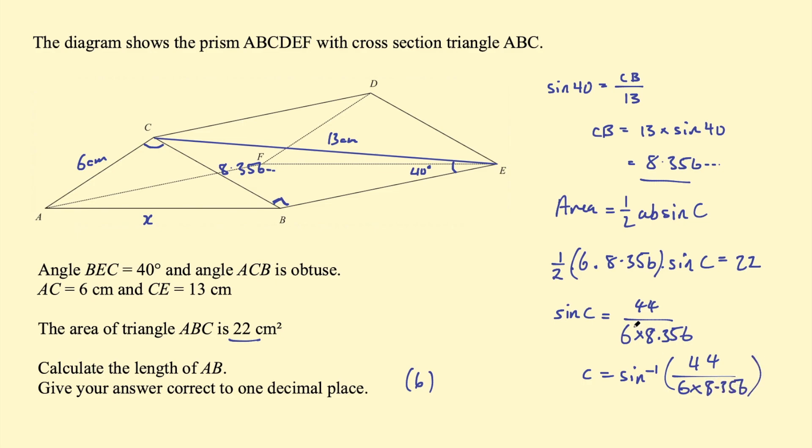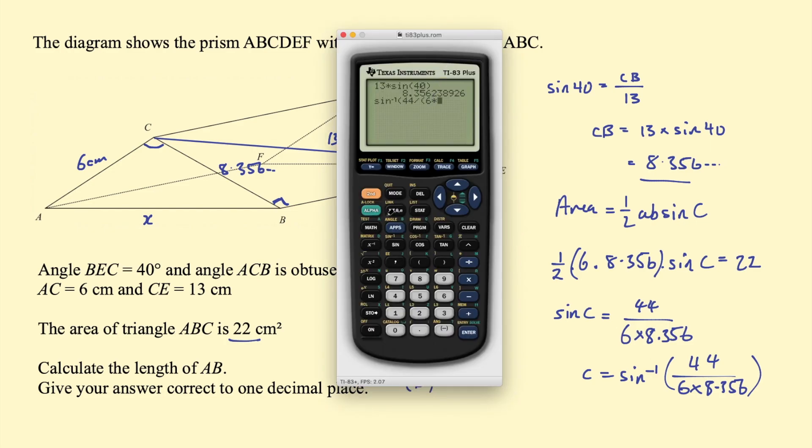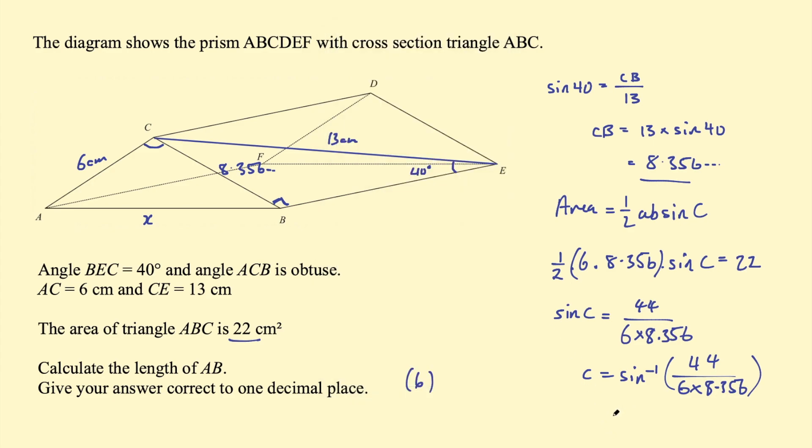And now to find C, we can take the inverse sine of that. So the inverse sine of 44 on 6 times 8.356. Okay, so let's go ahead and calculate that then, and here we can use the answer key on our calculator to save us entering that whole number or figure. So inverse sine of this, and I get 61.3527 and so on. So C equals 61.3527, but remember they tell us that the angle ACB is obtuse. This is not an obtuse angle.